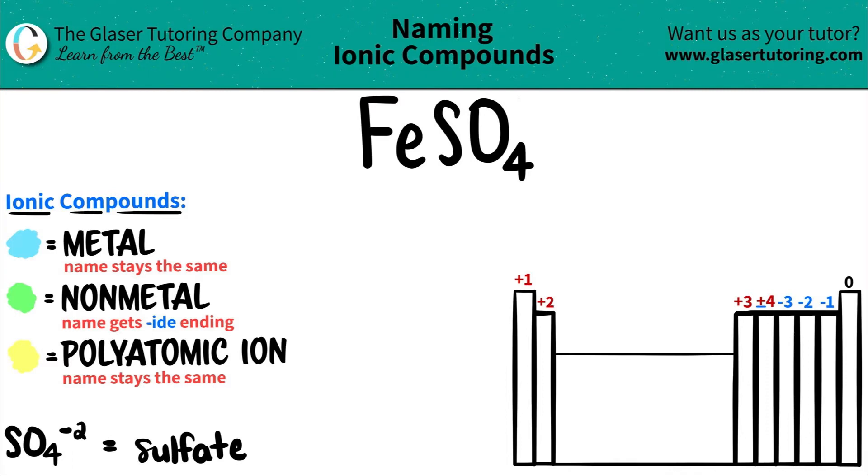Today we're going to be naming the ionic compound FeSO4. Here's a little trick: if you notice that you have three or more different elements in your compound, you know you're dealing with at least one polyatomic ion.